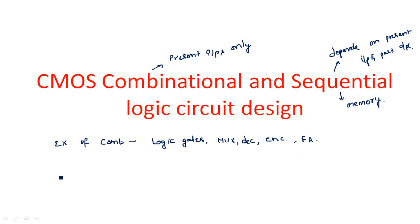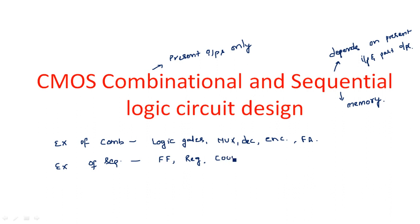Examples of sequential logic circuits: since sequential logic circuits involve memory, we can say flip-flops are an example. Registers — which are a group of flip-flops — and counters also qualify, because counting operations need memory to count past values. All these are examples of sequential logic circuits.